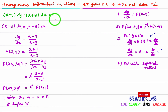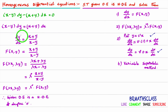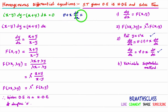Now we will solve this homogeneous differential equation. To solve it, we follow a particular procedure: we take y = vx. When we differentiate y = vx, we get dy/dx = v + x·(dv/dx). We substitute y = vx and dy/dx = v + x·(dv/dx) into the given differential equation.